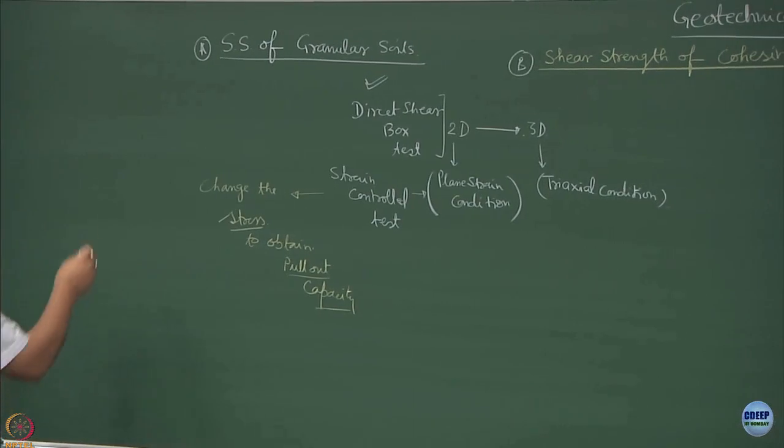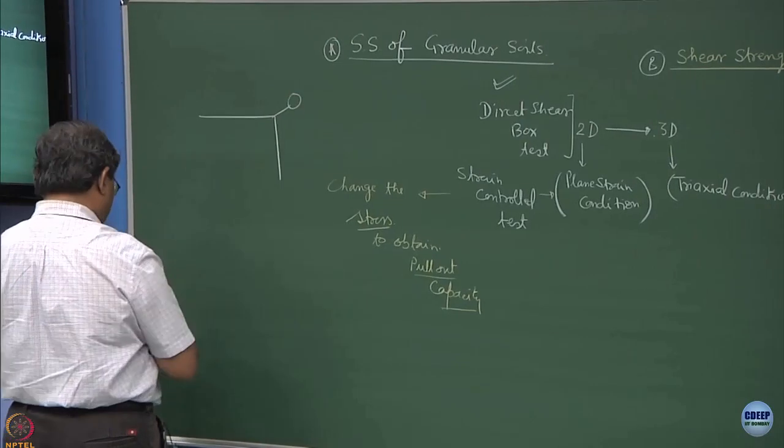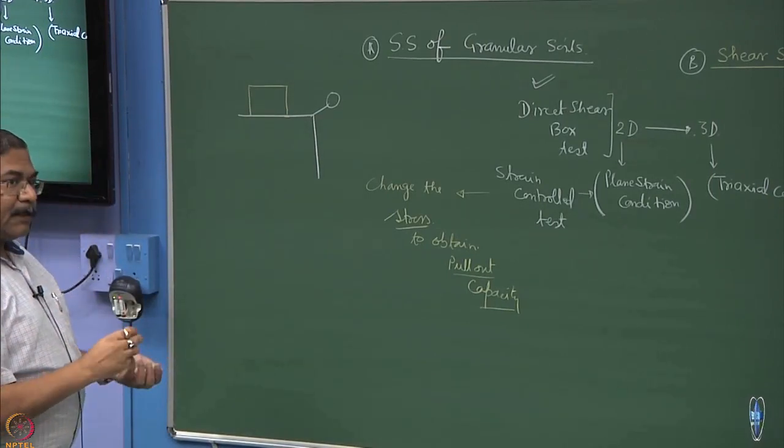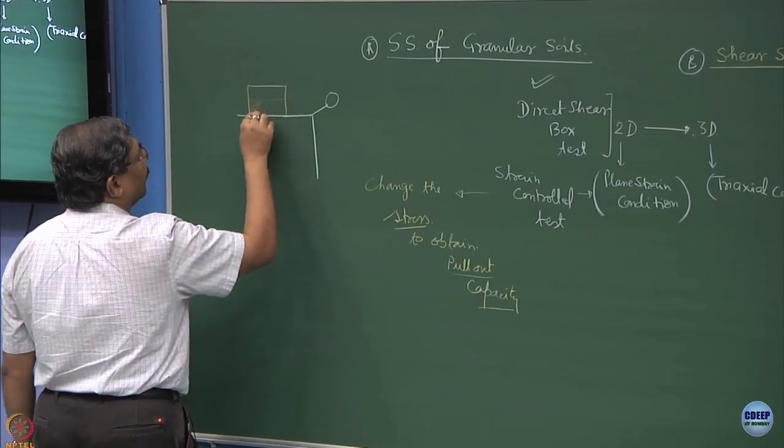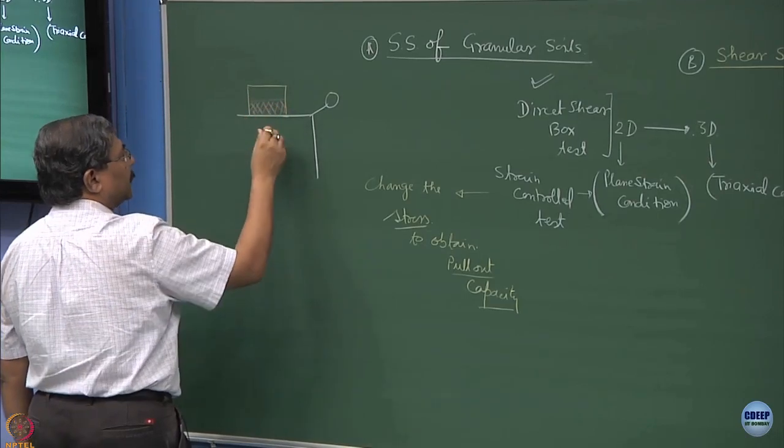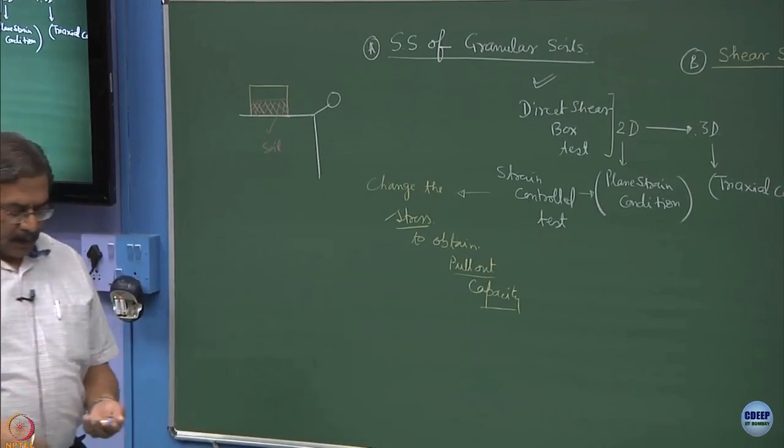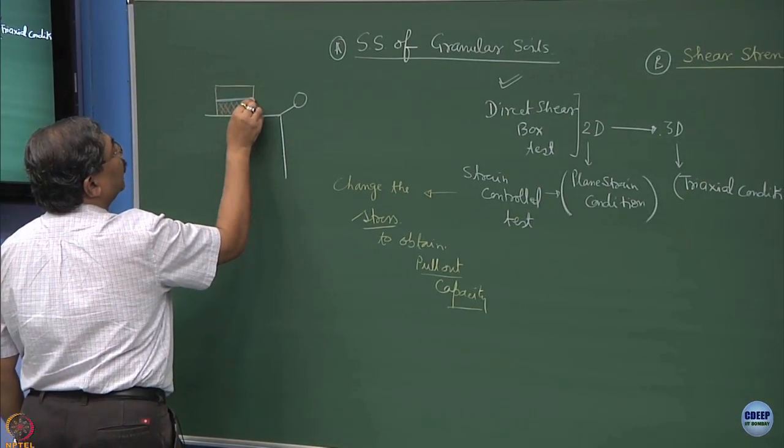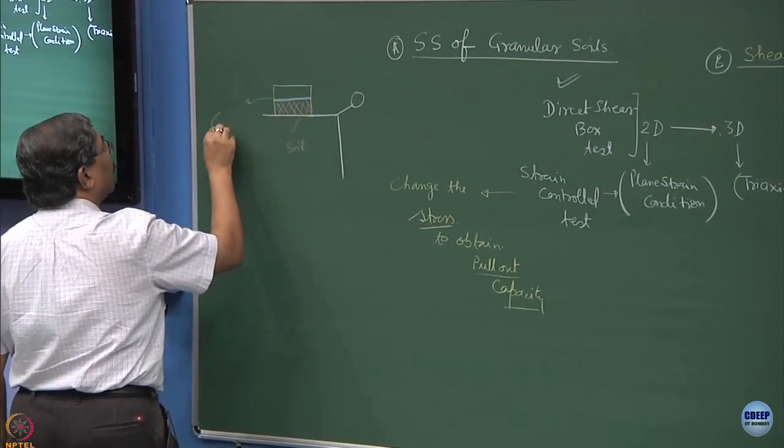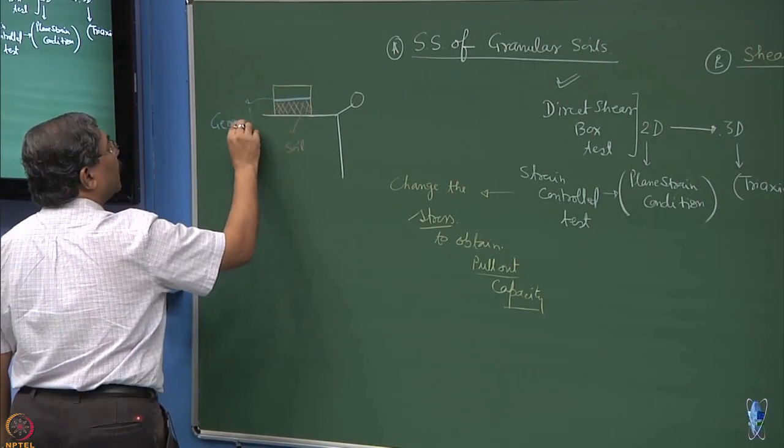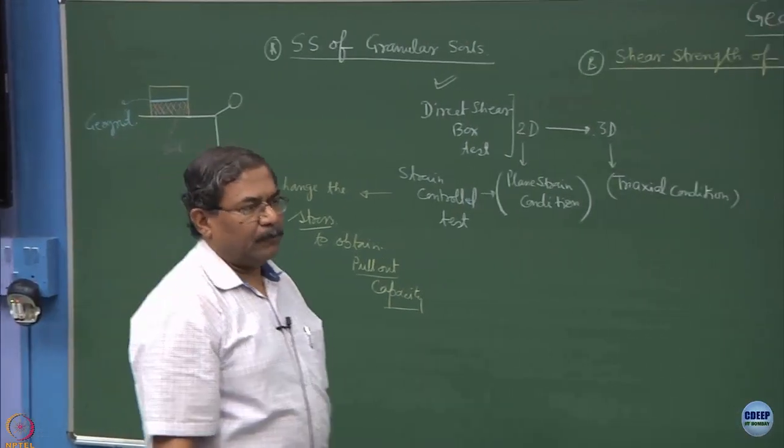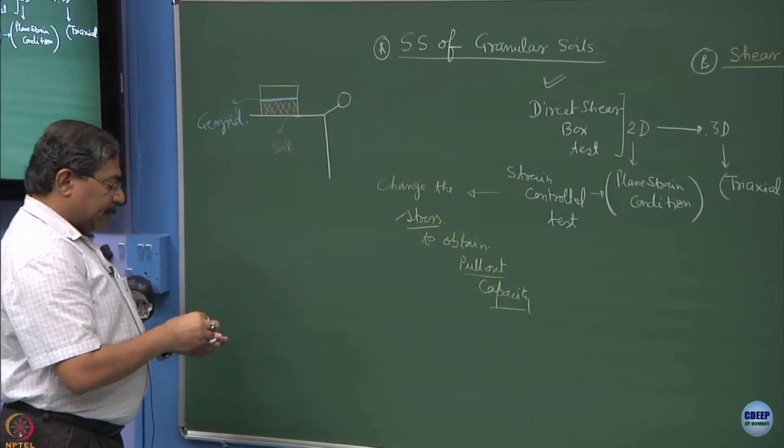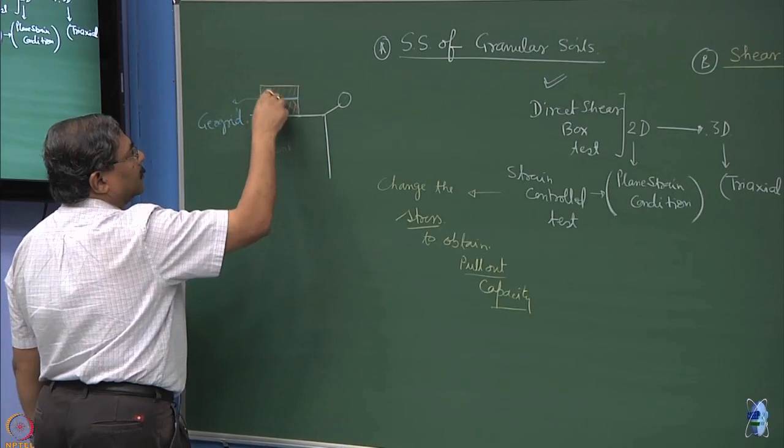These tests which are stress controlled are normally performed for finding out the pull out capacity. In your 10 plus 2 physics, you have studied this type of situations. If I have a pulley arrangement and if I keep a direct shear box setup, the trick is the way you will be making the sample. The lower half of the sample would be the soil of your interest, mostly granular material. And we will create an interface.